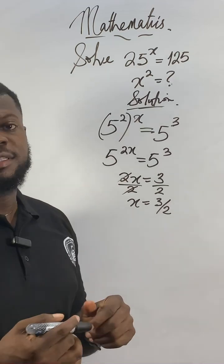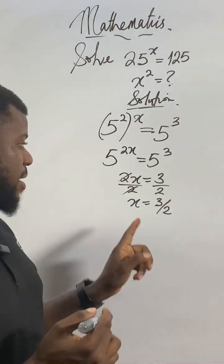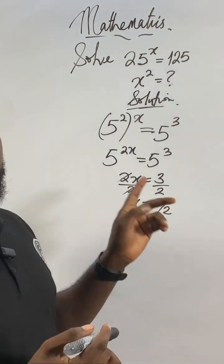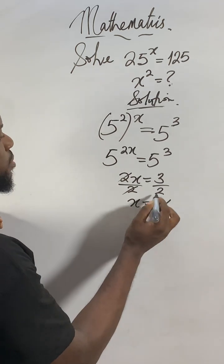But it's not x, the question says find x squared. So if x is 3 over 2, x squared will be...